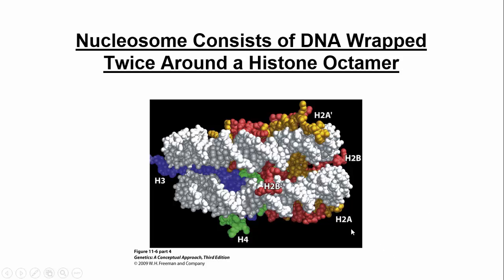The four types are H2A, H2B, H3, and H4. Don't get confused by these names — they're just names for proteins. When people discover proteins, they number them either based on the order in which they were discovered, or the order in which scientists believe they evolved. So there is some logic to all these numbers.